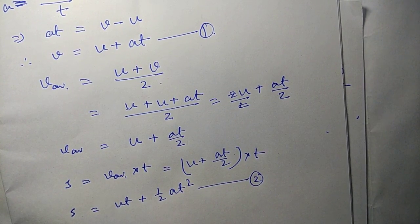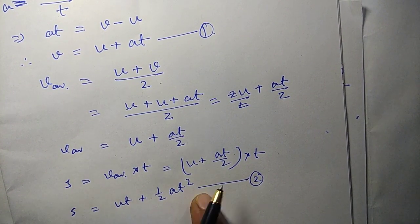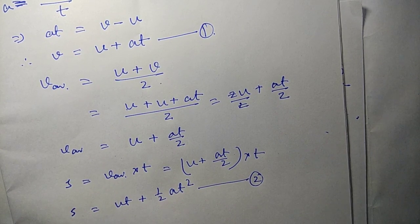Now we can calculate the displacement s as average velocity into time, which is (u plus at over 2) into t. Taking t inside the bracket, it gives us ut plus half at square, which is already our second equation s equals to ut plus half at square.